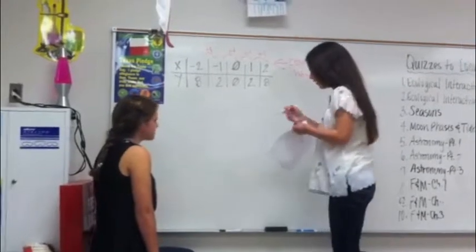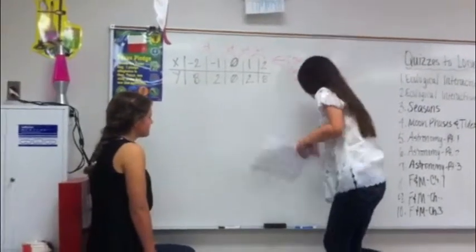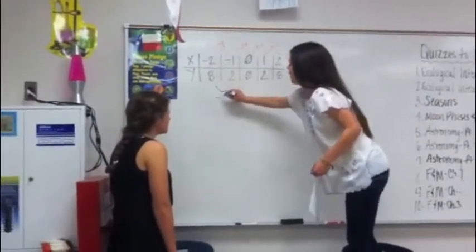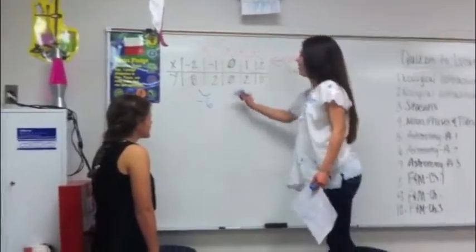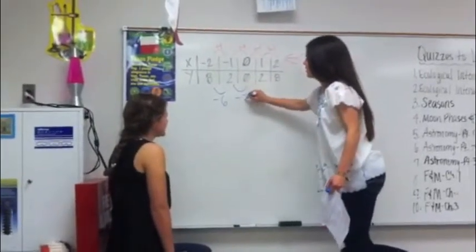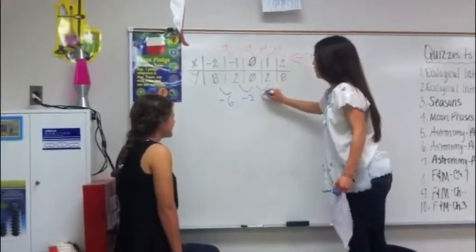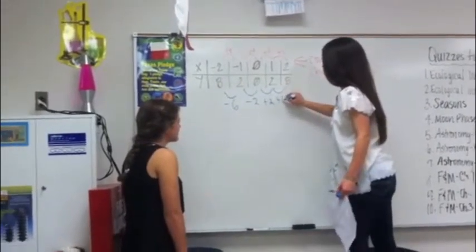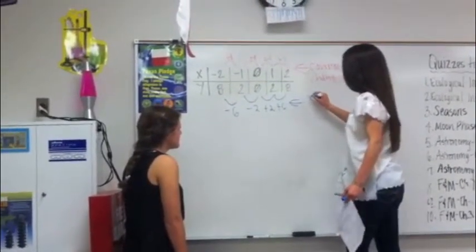Now, on the y values, it's a little different. The difference between 8 and 2 is minus 6. The difference between 2 and 0 is minus 2. And 0 and 2 is plus 2. And 2 and 8 is plus 6. And this would be the first difference.